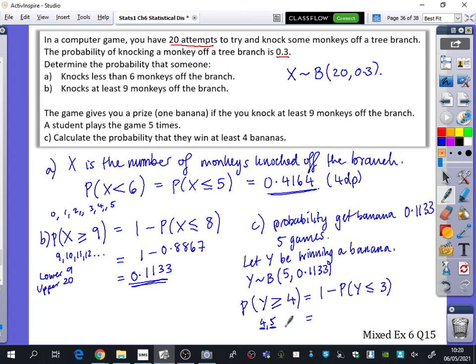OK. If you do the graphics, you can do four and five. But I'm going to do... Give me a second. Did you change the things to five and 0.113? Yeah. 0.999925. So if I do one minus that, I get 0.00075.